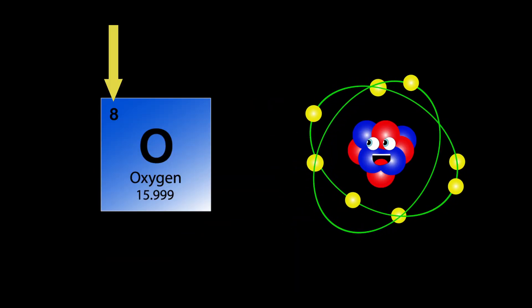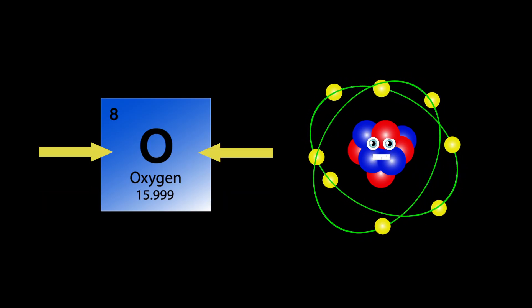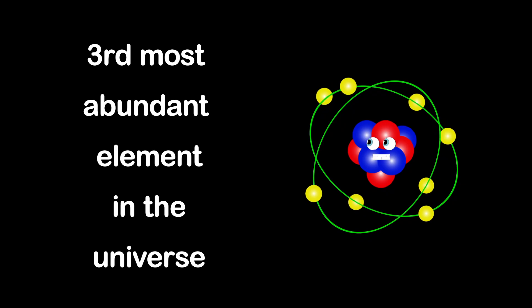My name's oxygen. My atomic number is 8. My atomic mass is 15.999. My symbol's O isn't that great. I'm the third most abundant element in the universe, after elements hydrogen and helium of course.